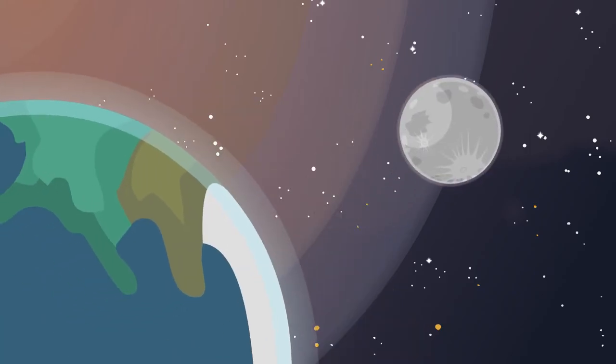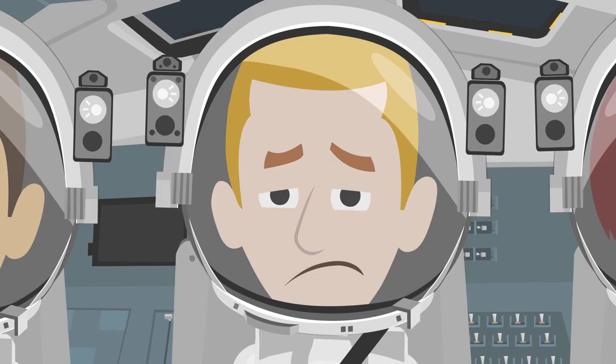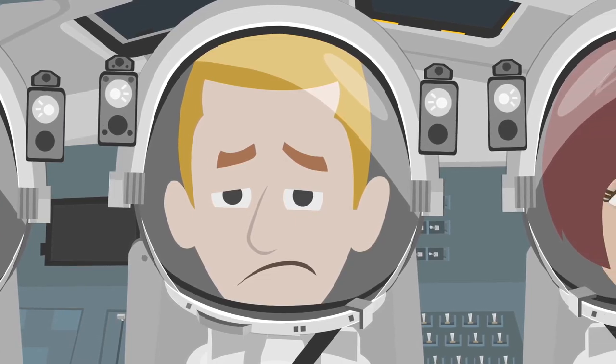You reach the moon. The automated landing system places your craft down in an area where several unmanned supply craft previously landed. They contain the supplies you will need to establish the new base, but you immediately notice a problem.